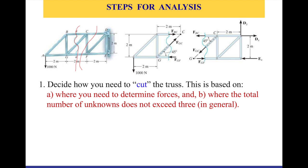Another criteria is where the total number of unknowns does not exceed three. This is very important: your section should not pass through more than three members. It could pass through more than three members, but those are special cases. So try to find which member you want to find the force in, set the section there, and make sure we don't exceed three unknowns in general. That's step one.